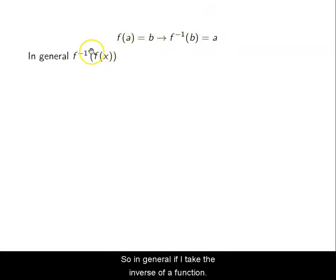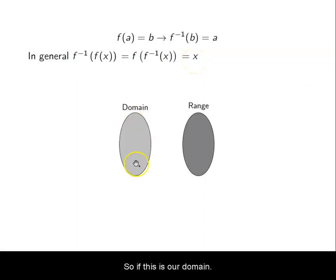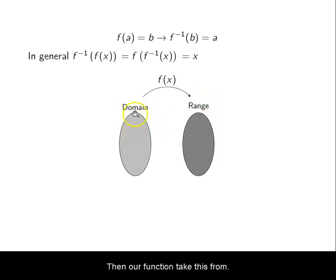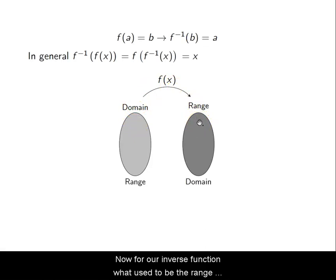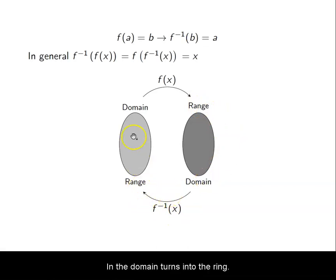In general, if I take the inverse of a function composed with the function itself, they cancel each other out, and I always end up with my original input. If this is the domain and this is the range, the function takes inputs to outputs. For the inverse function, what used to be the range becomes the domain, and the domain becomes the range — they swap.